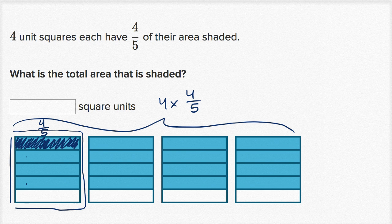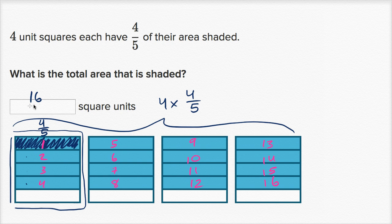Let me count: this is one, two-fifths, three-fifths, four-fifths, five-fifths, six-fifths, seven-fifths, eight-fifths, nine-fifths, ten-fifths, eleven-fifths, twelve-fifths, thirteen-fifths, fourteen-fifths, fifteen-fifths, sixteen-fifths. We have sixteen-fifths shaded in.